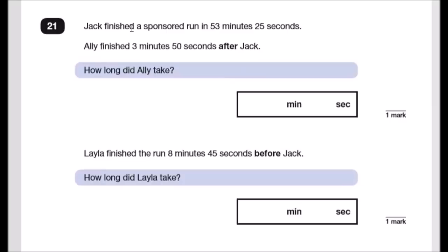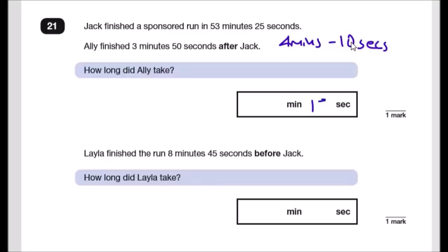Question 21: Jack finished a sponsored run in 53 minutes 25 seconds. Ali finished 3 minutes 50 seconds after Jack. Add 4 minutes (rounding up) then subtract 10 seconds: 53:25 + 4:00 = 57:25, then 57:25 − 0:10 = 57 minutes 15 seconds. Ali took 57 minutes and 15 seconds.